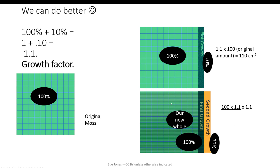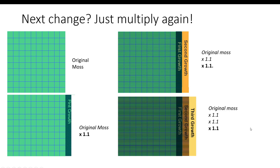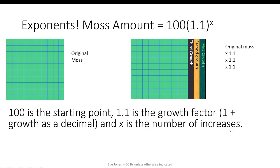The next month, the whole amount is going to grow. So we just take the answer, the 110 square centimeters, and multiply that by 1.1 again. The next month, applying our shortcut, we take the moss we had the earlier month, multiply it by 1.1 again for the third month. And we have a shorter way of writing this. Multiplying again and again and again is exponents.